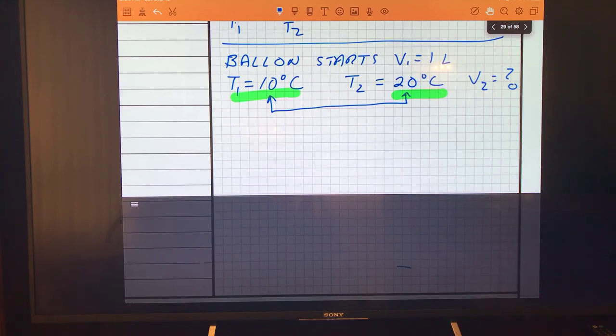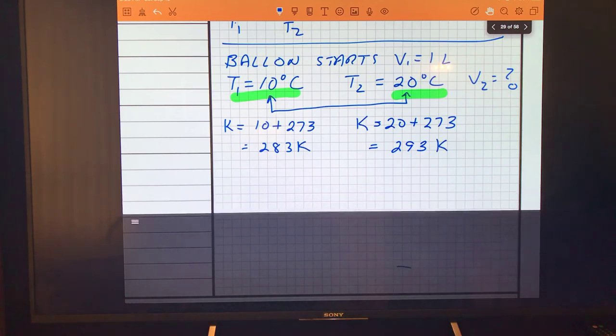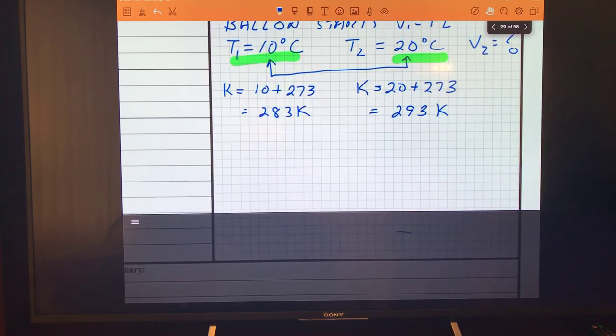So Kelvin equals 10 plus 273 over here, and Kelvin equals 20 plus 273 on the second one. So that means it equals 283 here and 293 on the other side, in Kelvin. Now you can see with those temperatures, it only increases a little bit, so therefore the volume only increases a little bit. Let's go ahead and do that.